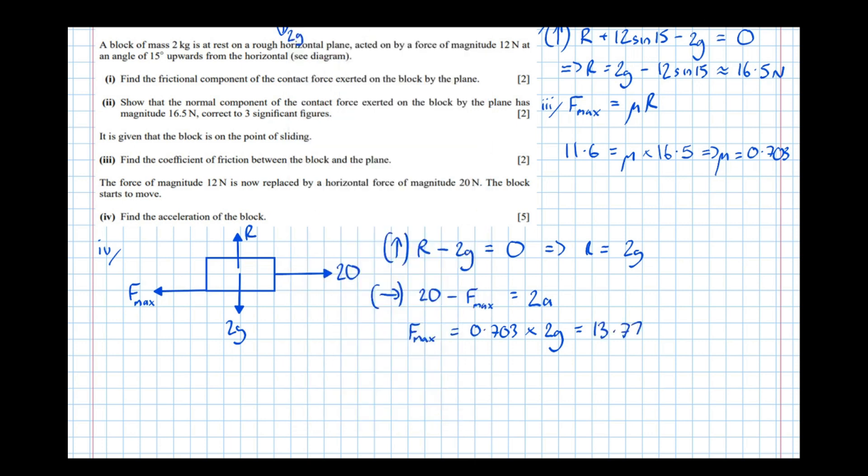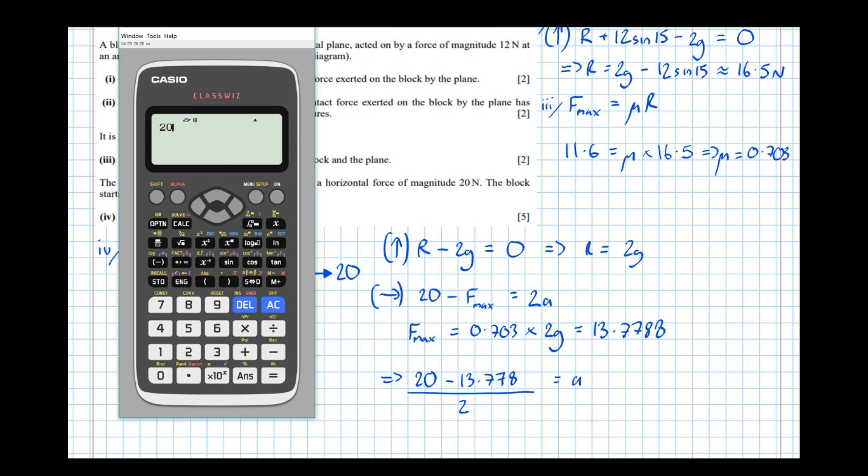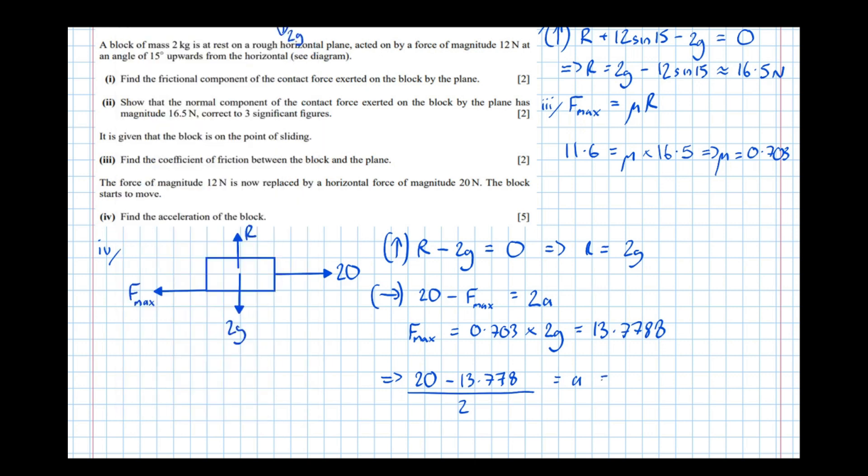Which means that 20 take the friction, over 2 equals the acceleration. So showing the full calculation, 20 take our previous answer, over 2 equals the acceleration, which is 3.11 meters per second squared.